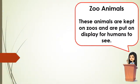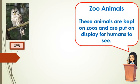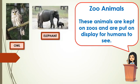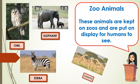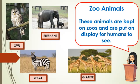We also have the zoo animals. These animals are kept in zoos and are put on display for humans to see, just like owl, elephant, zebra, and giraffe. Can you name other zoo animals?